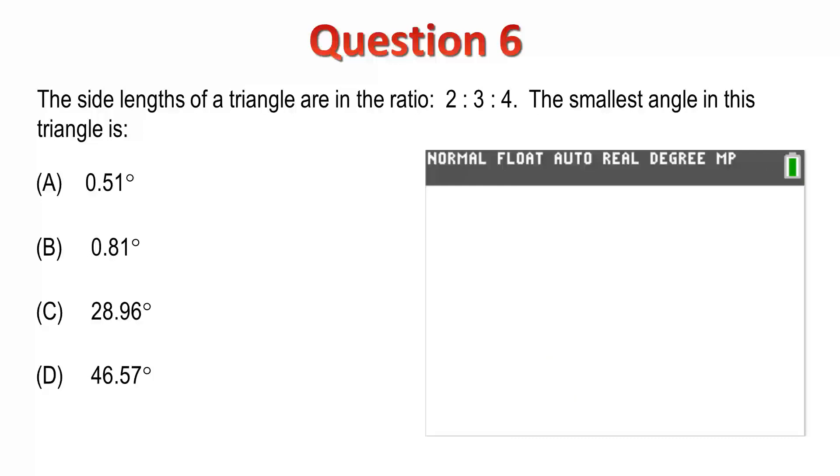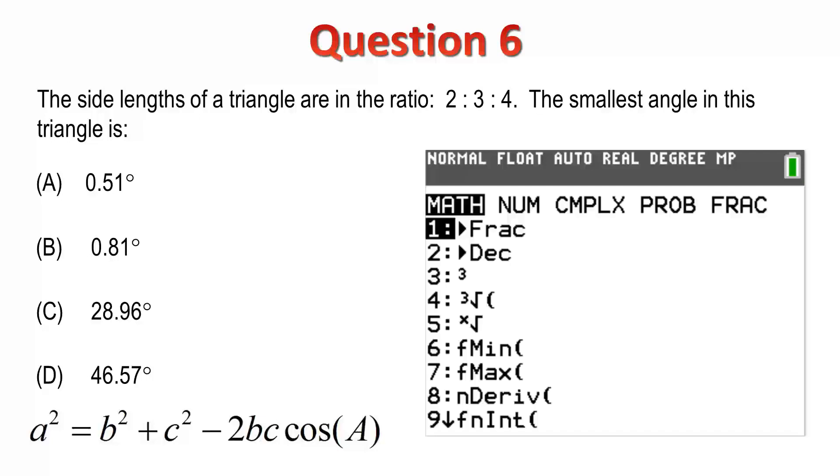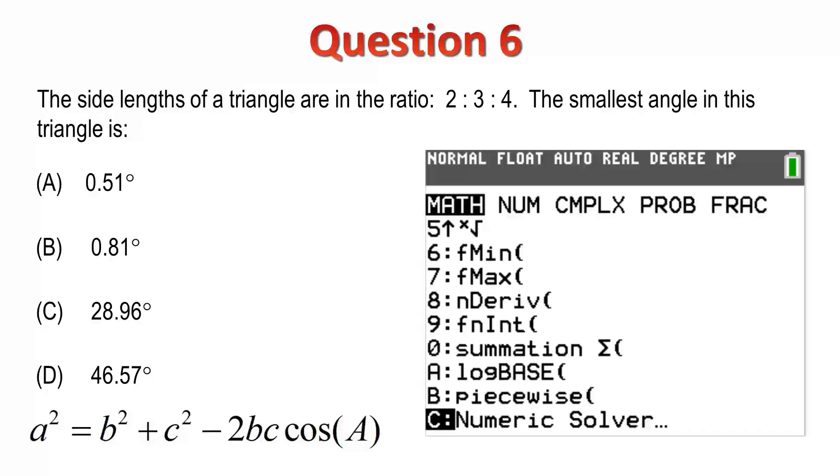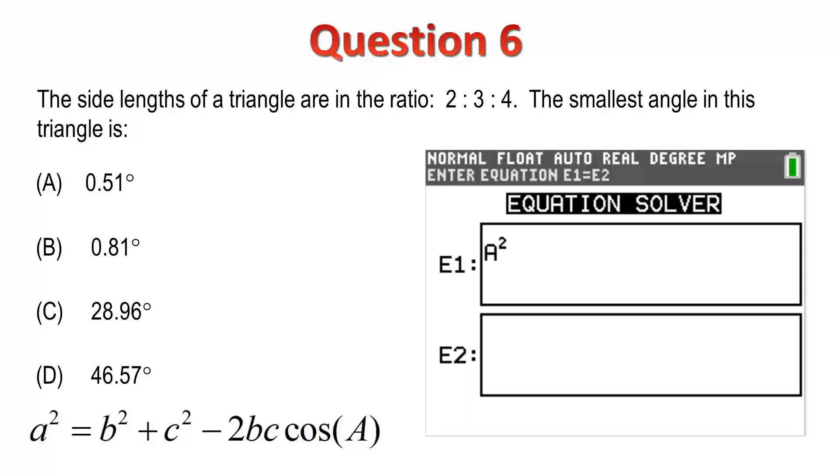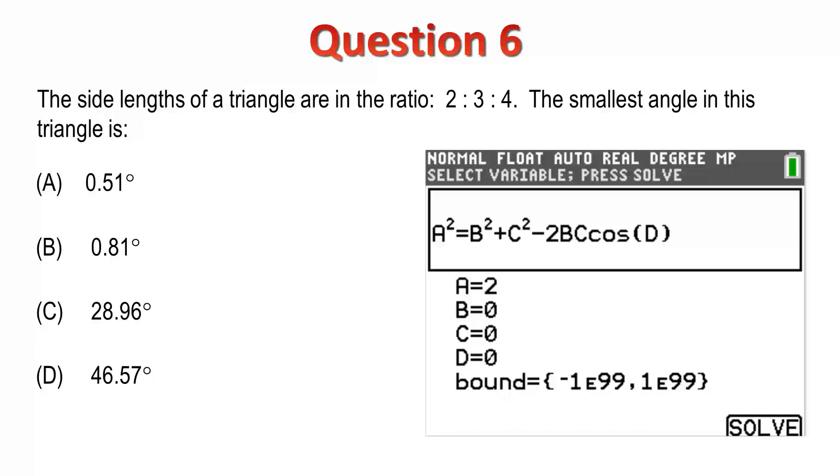Now, to answer this question, I'll use the cosine rule. You could transpose and substitute. Alternatively, I'll use the Solve command in the maths menu. For the left-hand side of my equation, I'll just enter A squared. For the right-hand side, I'll enter B squared plus C squared minus 2BC cos D. This is the cosine rule, but I've used D rather than A as the angle since the calculator does not distinguish between upper and lower case letters. Enter the values for A, B and C and solve for D. We get an answer of 28.9 degrees. Option C.